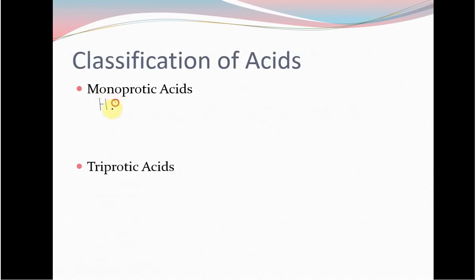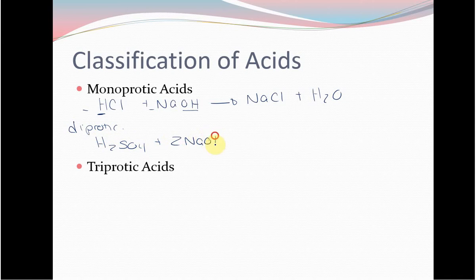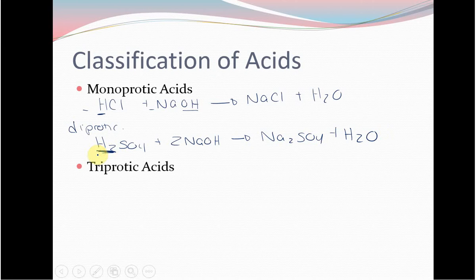Monoprotic acids are something like HCl. HCl plus NaOH gives NaCl and water — it's a one-to-one ratio because there's one H, so this is monoprotic. One proton comes off, and one hydroxide. If we had a diprotic acid, it would be something like H₂SO₄ plus two NaOH to form Na₂SO₄ and H₂O. This puts off two acidic protons, so the ratio is one to two. Monoprotic means one acidic proton comes off; diprotic means two; triprotic means three.